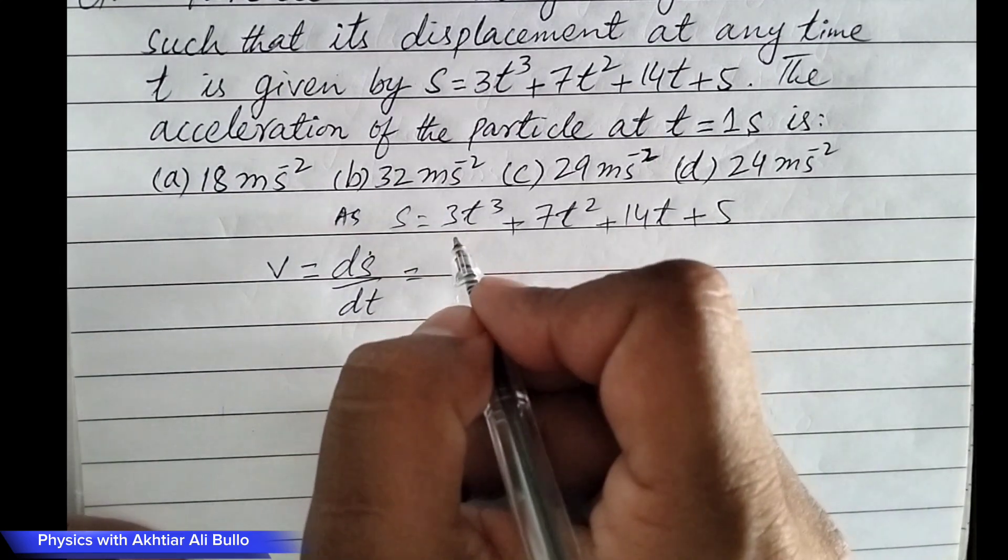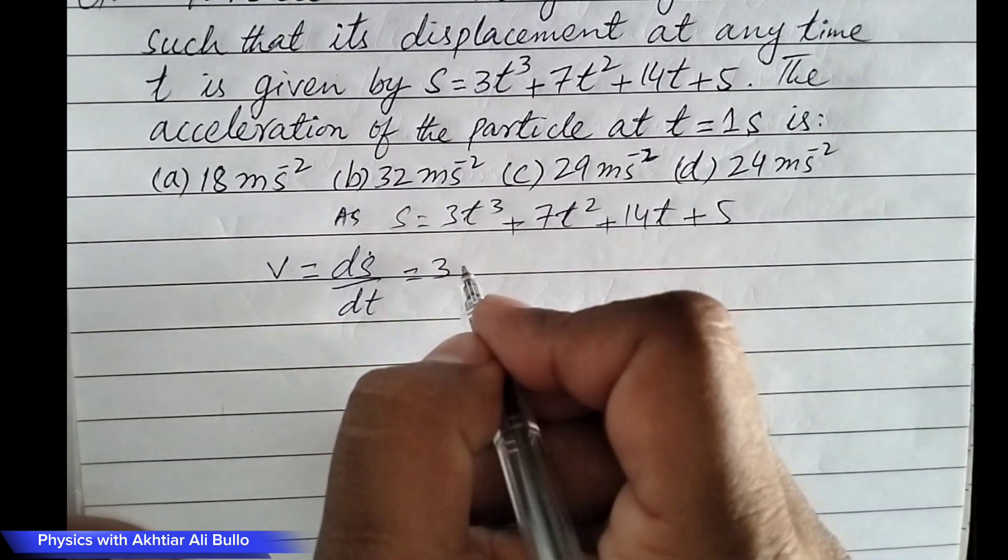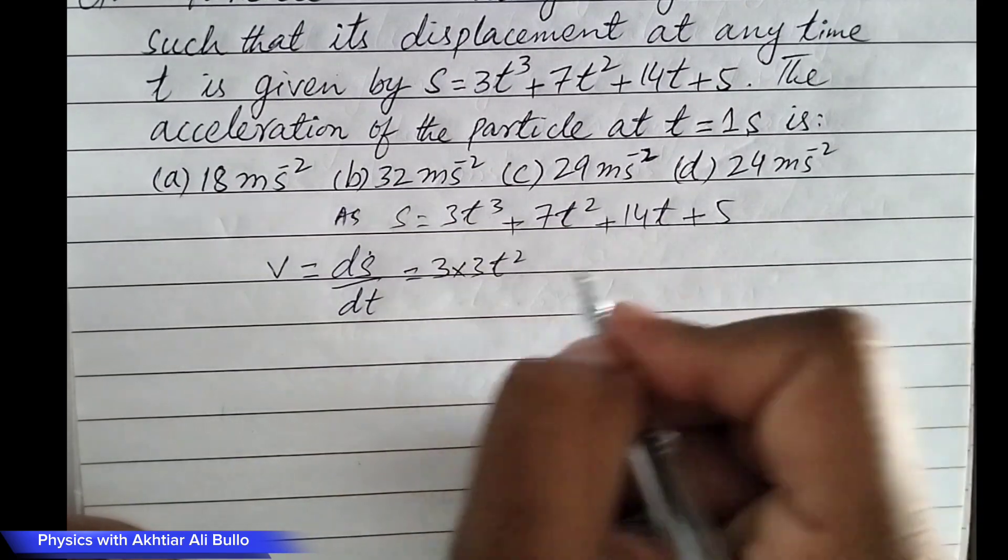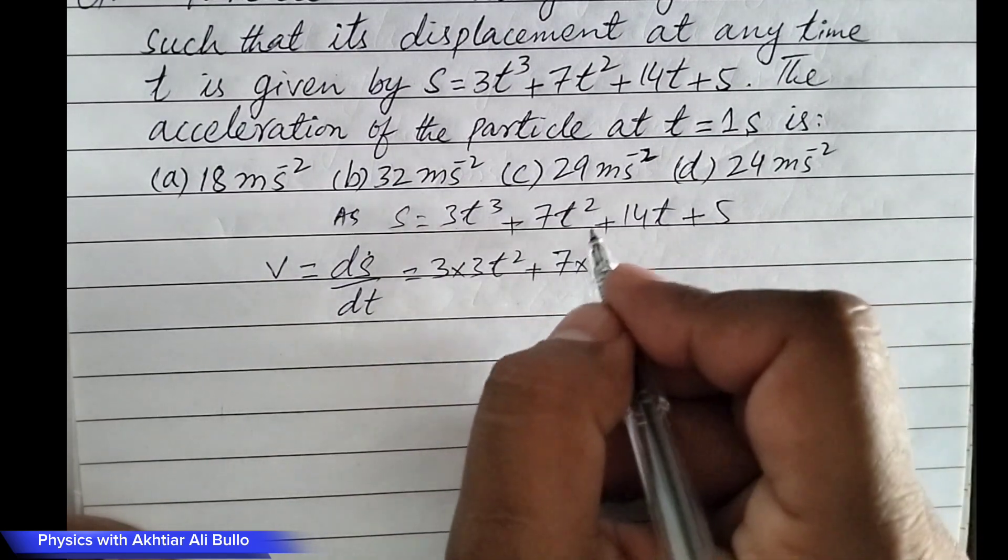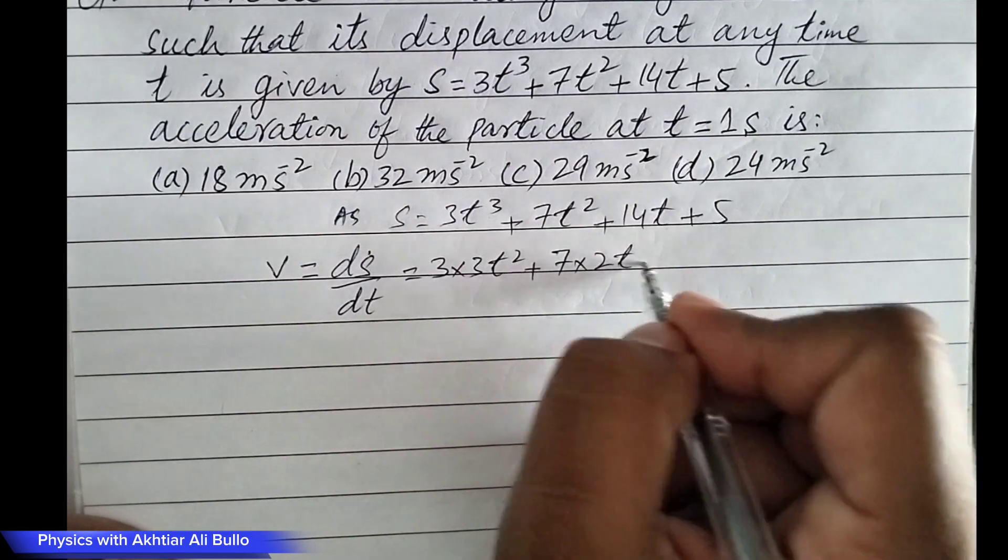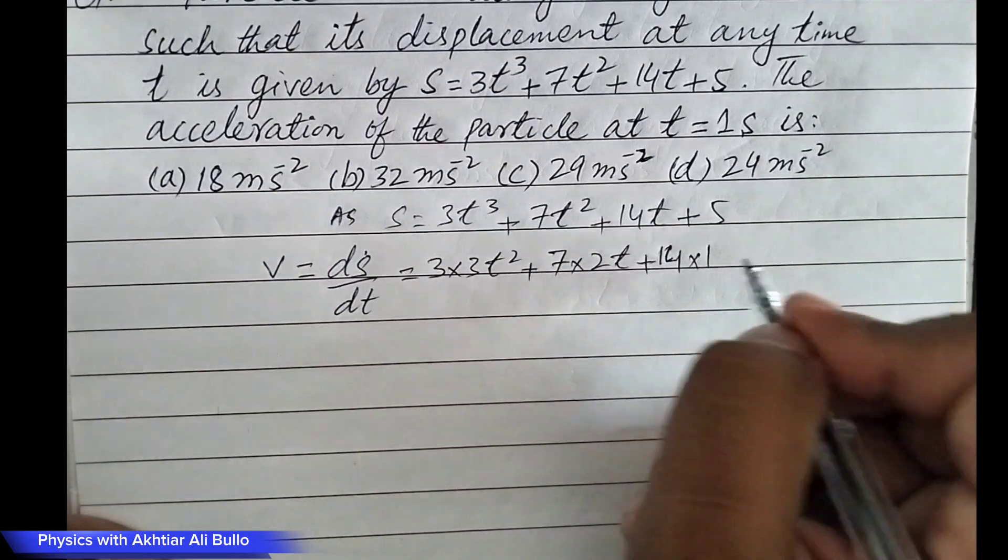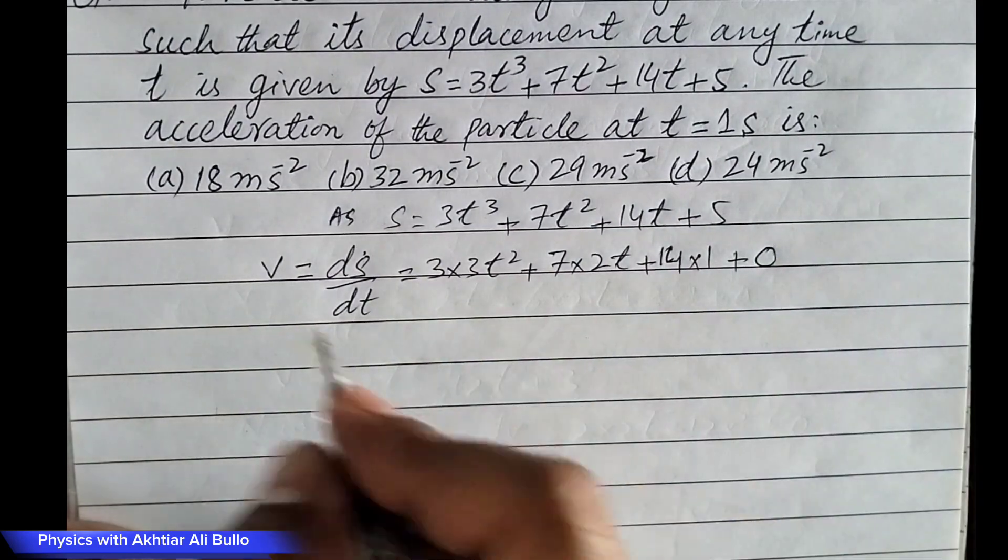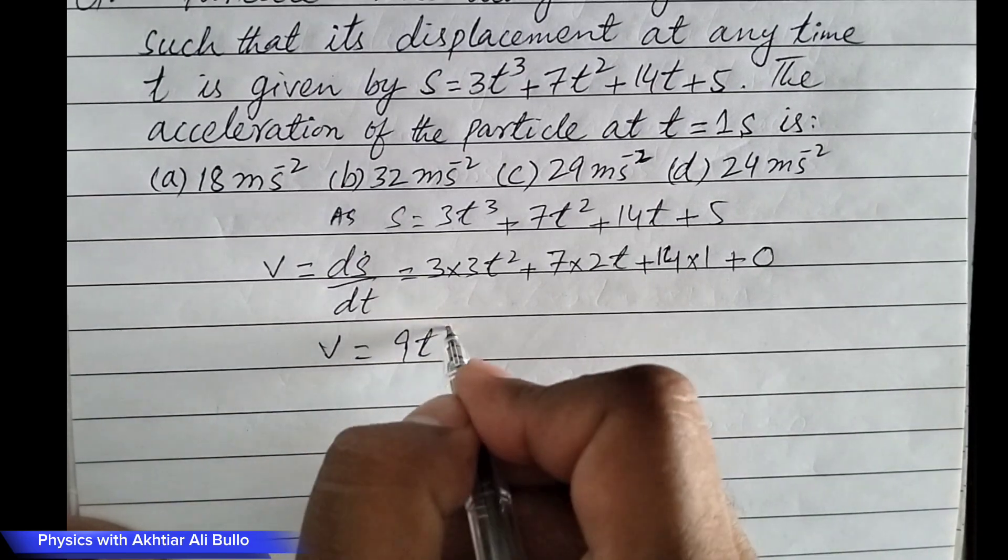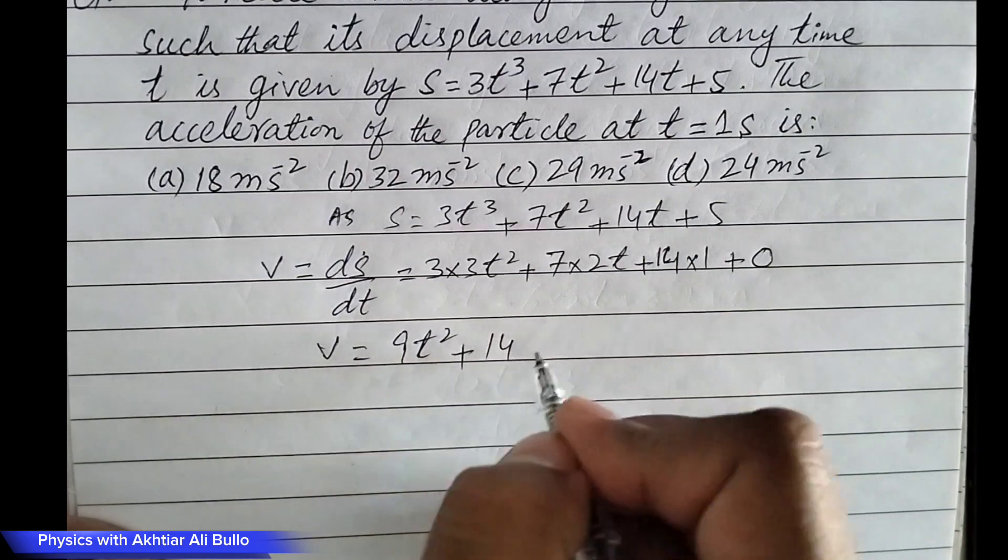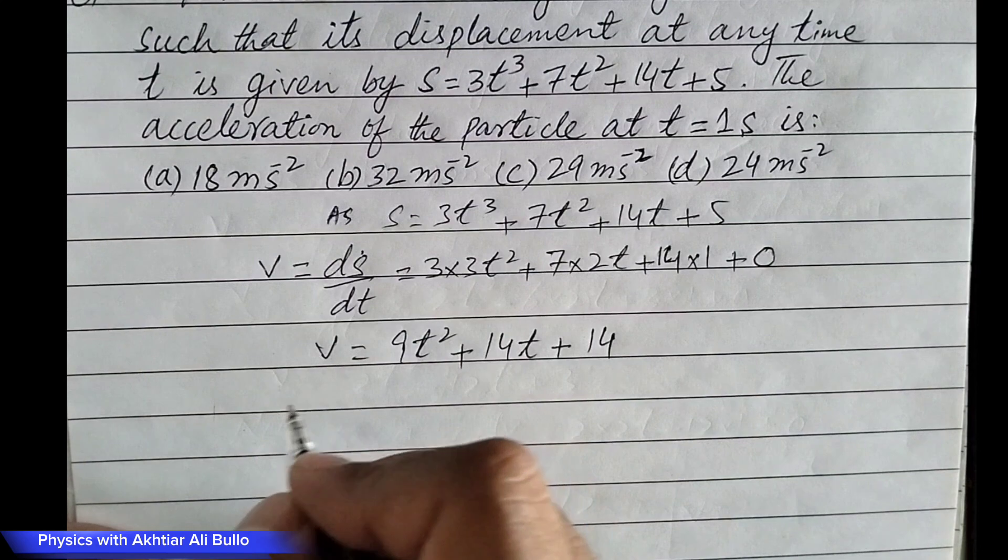So, 3 times the derivation of t cube is 3t square, plus 7 times the derivation of t square will be 2t, plus the derivation of 14t is 14, plus 0. v will be obtained as 9t square plus 14t plus 14.